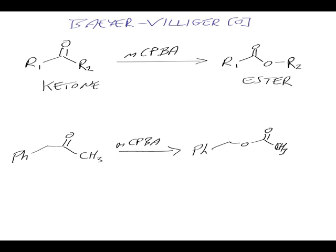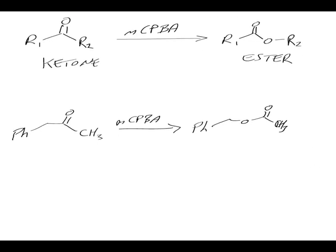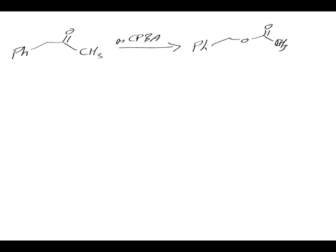So let's move that down a bit and have a look at the mechanism for this process. So MCPBA is a peracid — and what do I mean by that? I'll draw this in blue. It's a carboxylic acid with an extra oxygen like that.